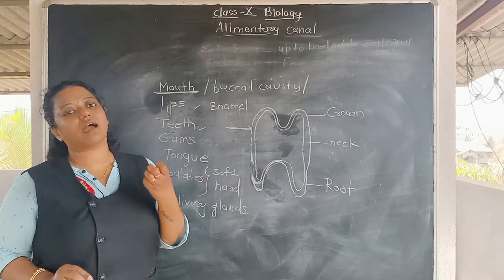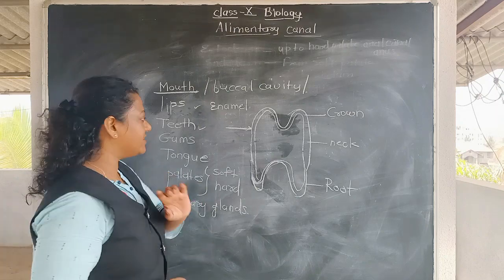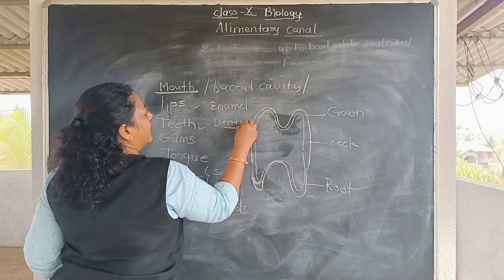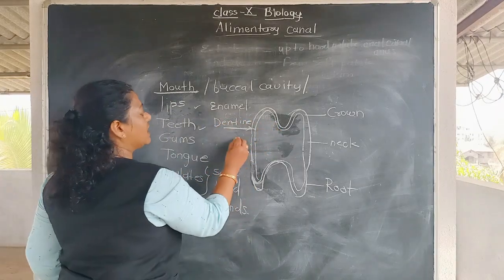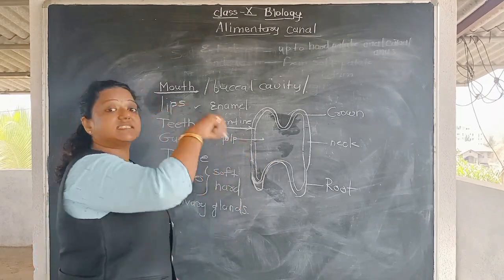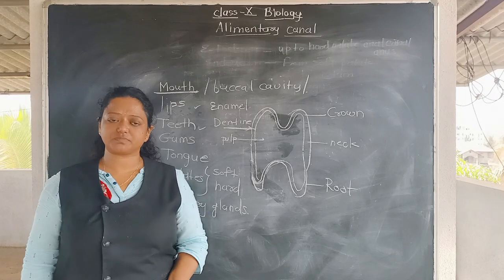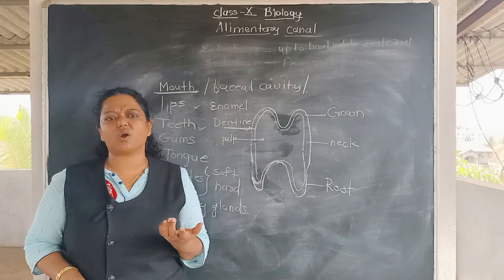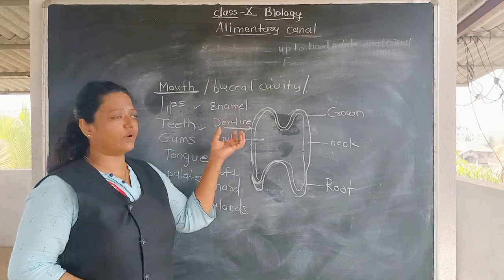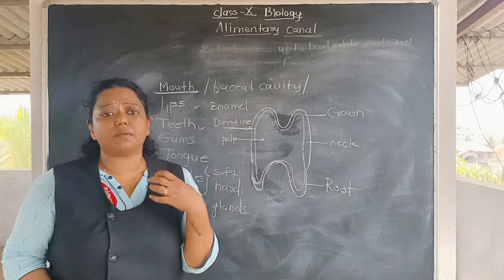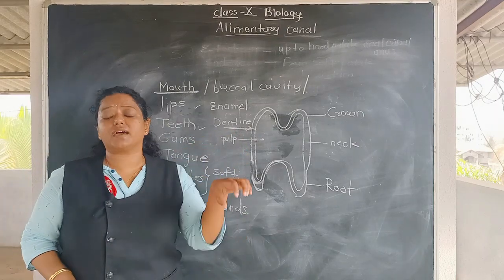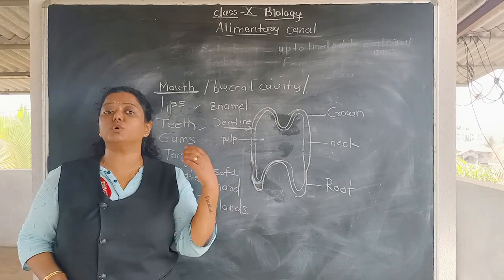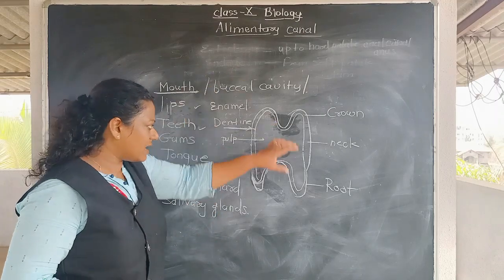Whenever teeth start decaying, they start paining or become sensitive — because the enamel goes, then the dentine goes, and we are touching the pulp. The pulp with its internal arteries and veins is quite sensitive, so we feel sensitivity whenever tooth decay starts.